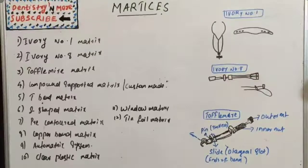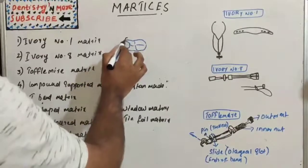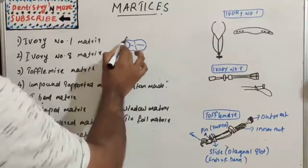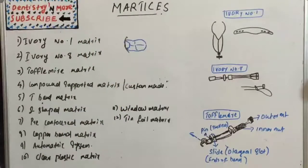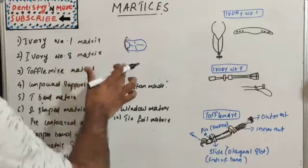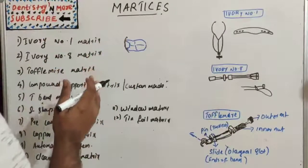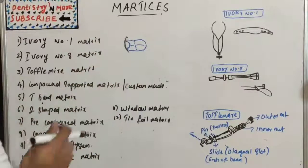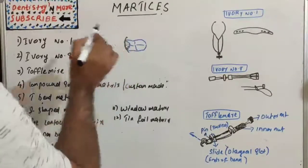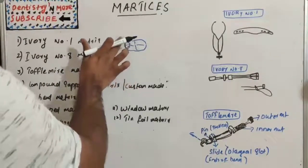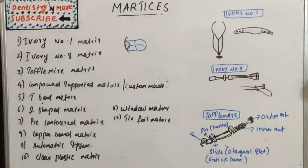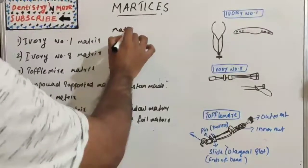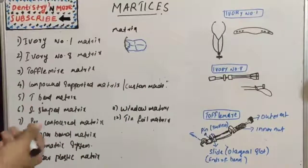Matrixing is a procedure whereby a temporary wall is created opposite to axial walls, surrounding areas of the tooth structure that were lost during cavity preparation. So we are creating a temporary wall to help us in the restoration procedure — that is matrixing.